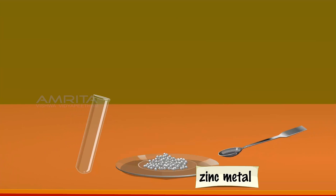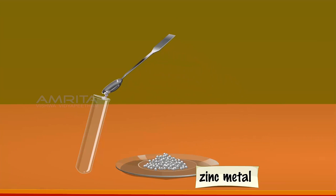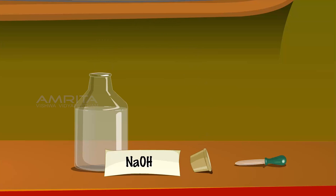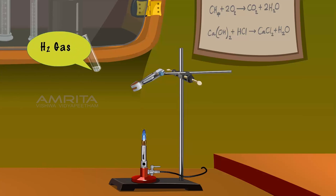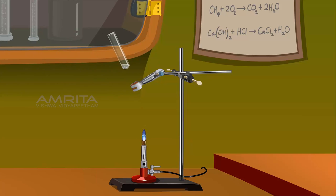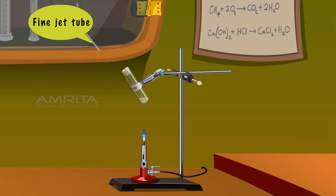Using a spatula, transfer some of the zinc metal from the dish into the test tube. Take a few drops of the NaOH solution from its bottle using the dropper and add this to the test tube containing the zinc metal. Clamp the test tube to the stand, then close the mouth of the test tube with the cork and pass the jet tube through the hole in the cork into the test tube.